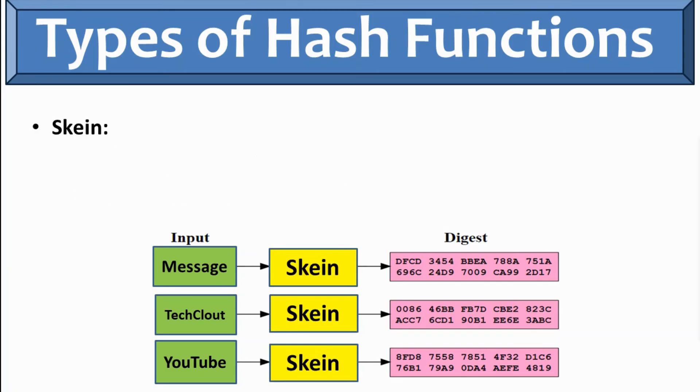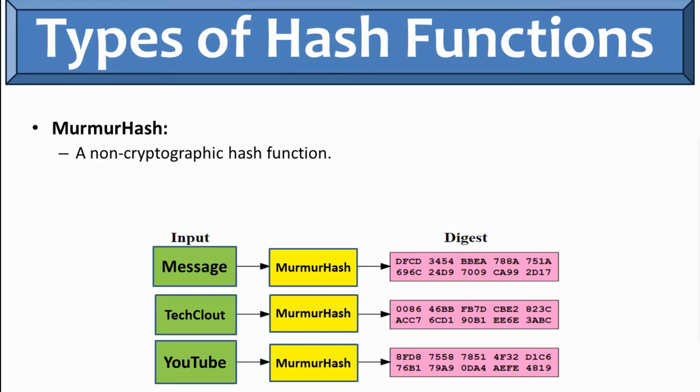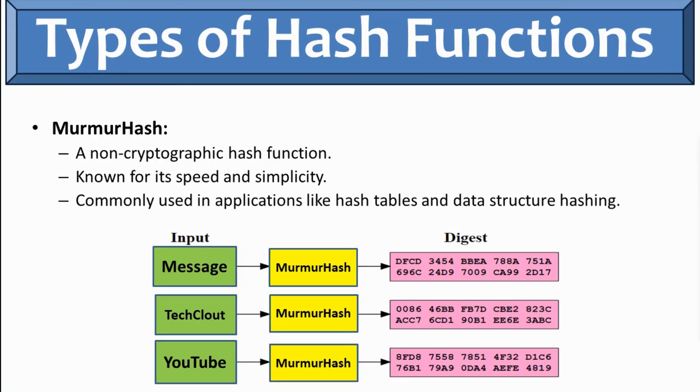SKEIN, so one of the SHA-3 finalists also designed to be efficient and secure. It offers function of various output sizes. Then MurmurHash. So this hash is a non-cryptographic hash function known for its speed and simplicity. Commonly it is being used in application like hash table and data structure hashing.